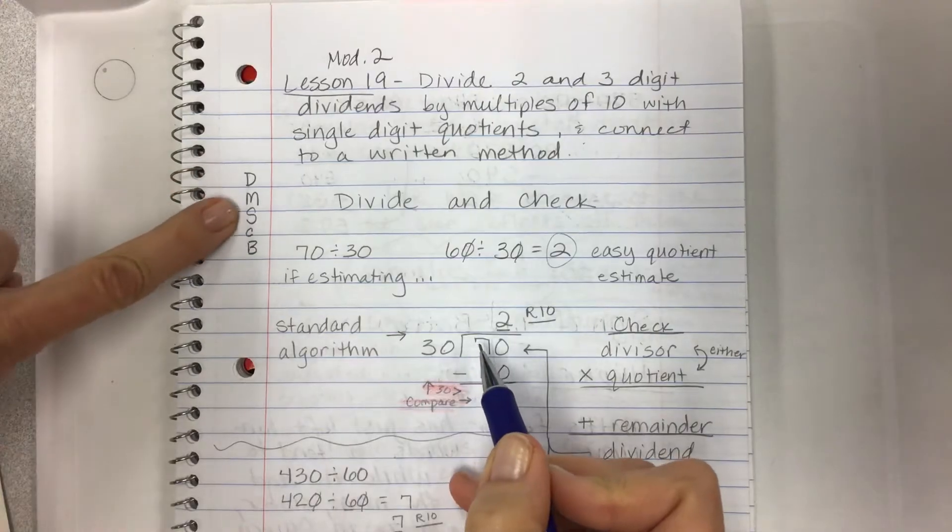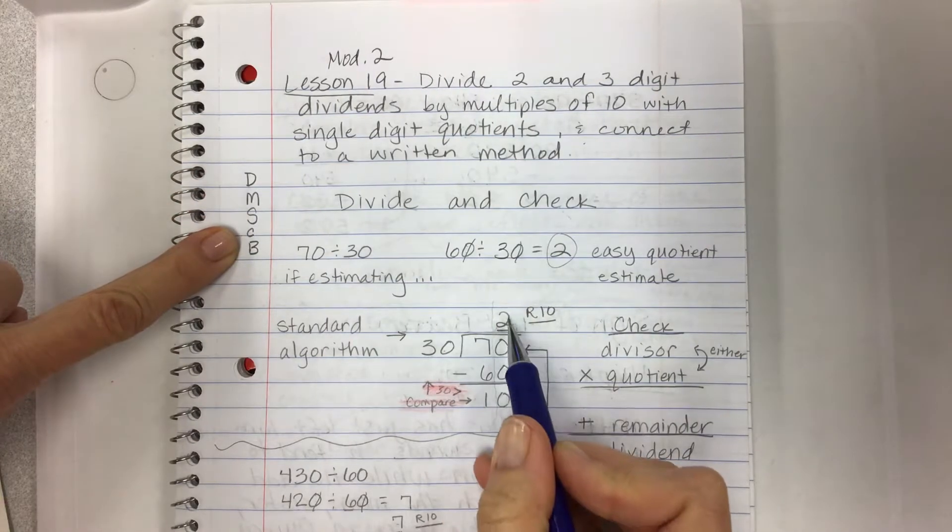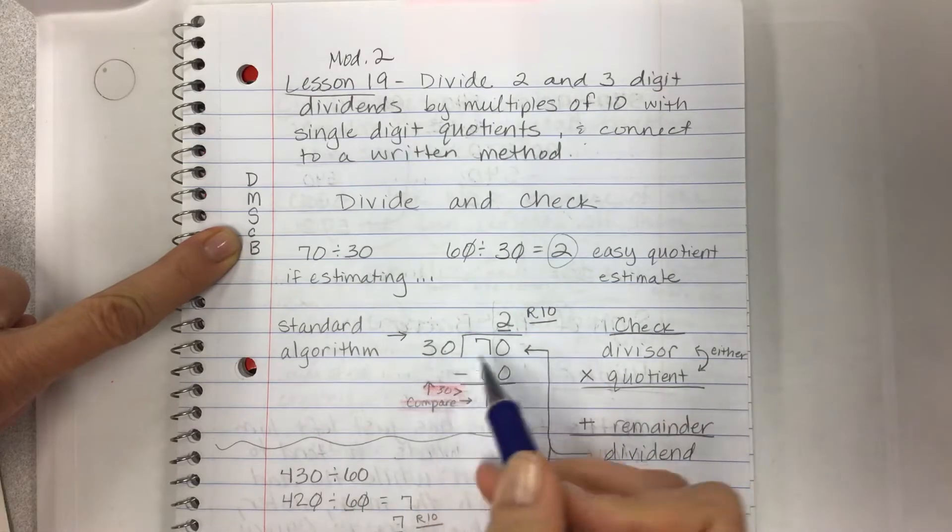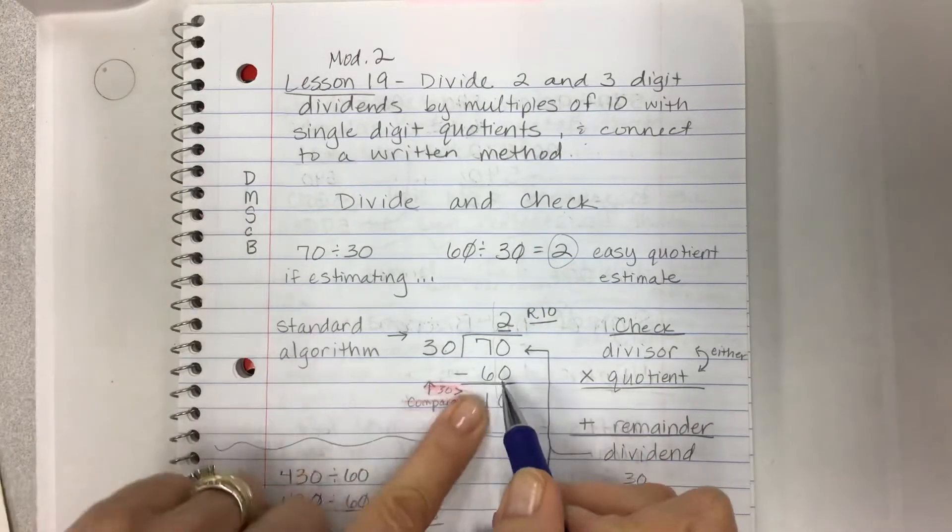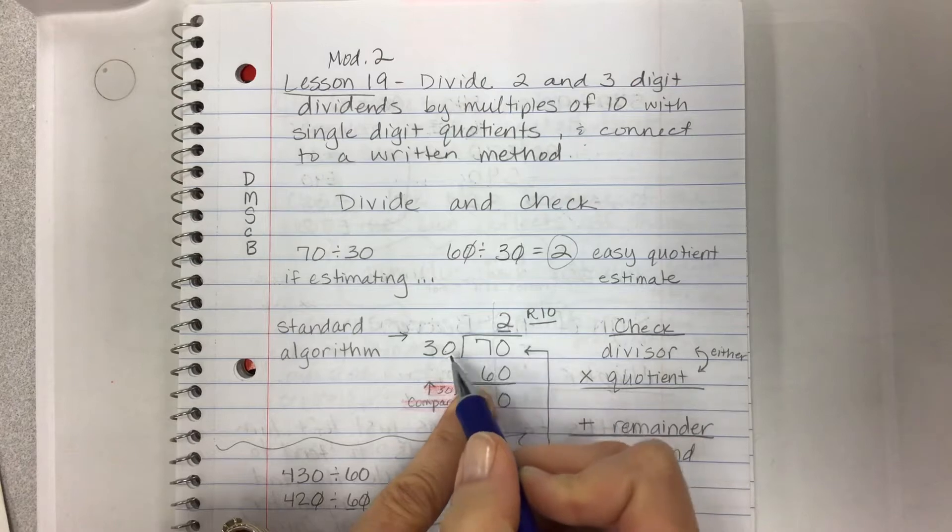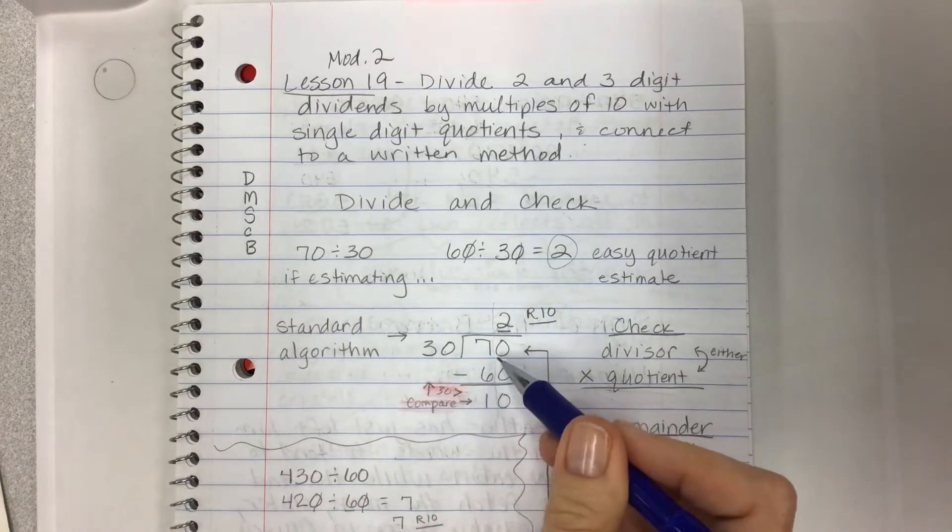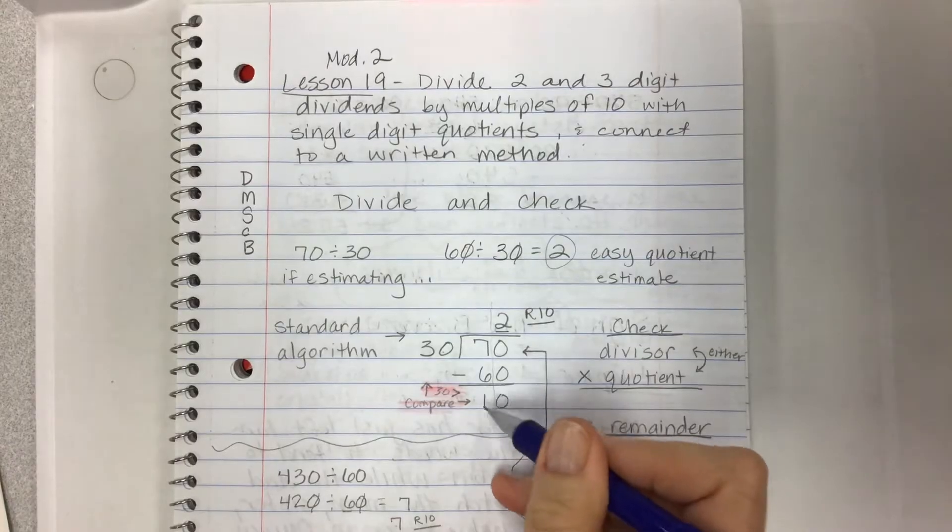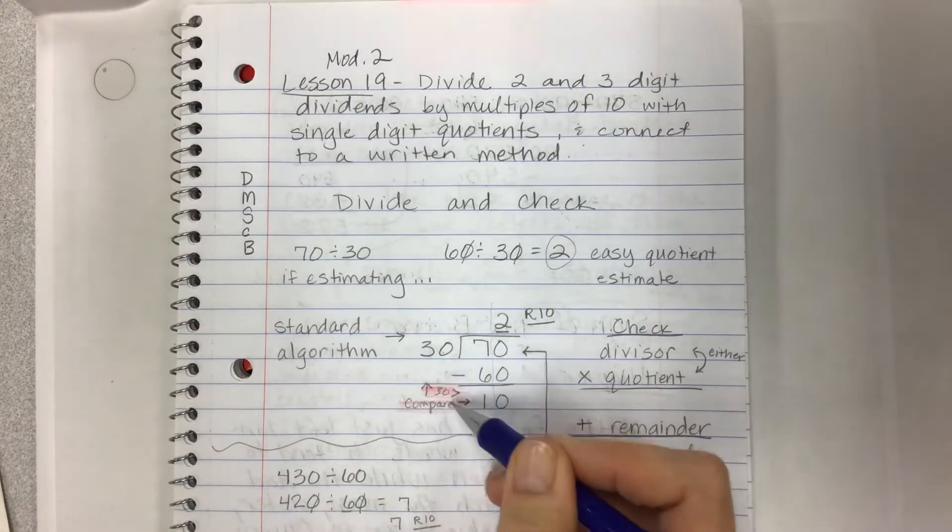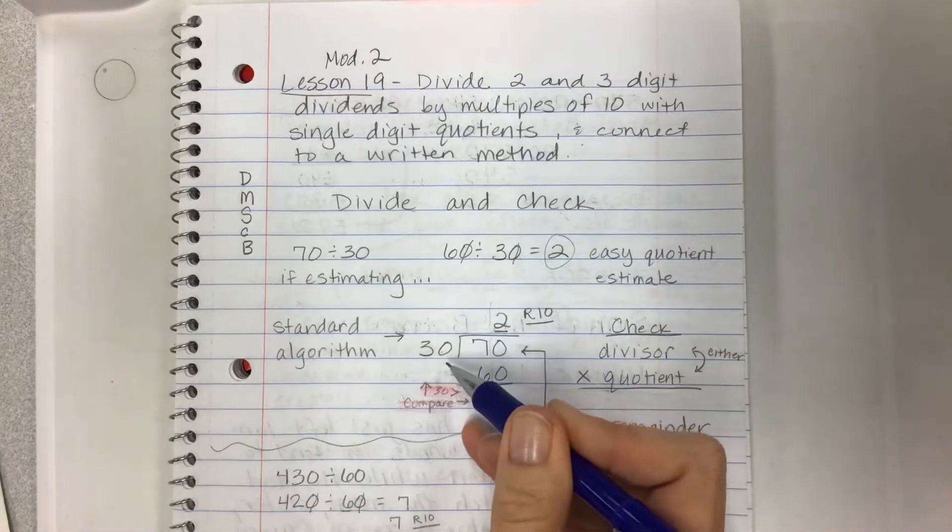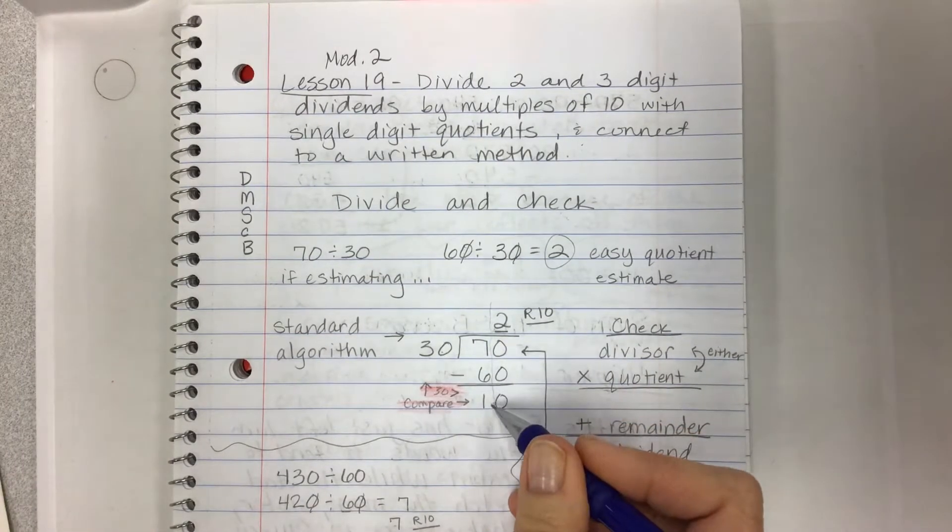Once you get that, then you can proceed using the steps of the division family. Multiply two times 30, now we have some larger divisors, remember multiples of 10, using 60, two times 30 uses 60 out of the 70 in the set. Now that means that I have 10 left. This is really an important step to compare, because you have to have less than your divisor amount when you're doing long division here.